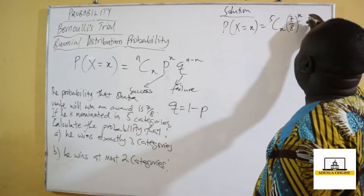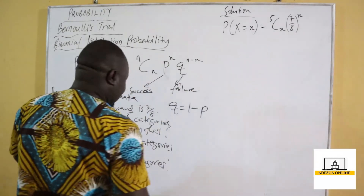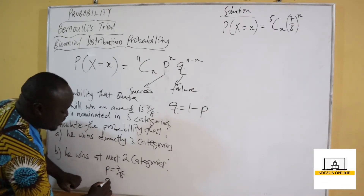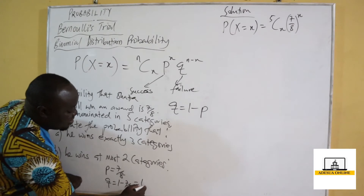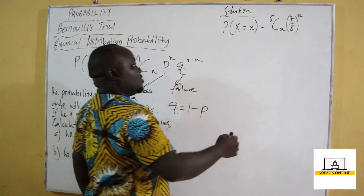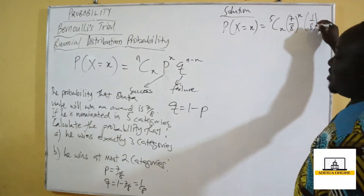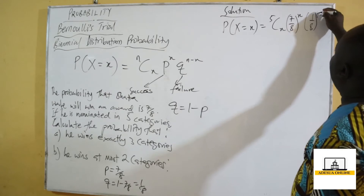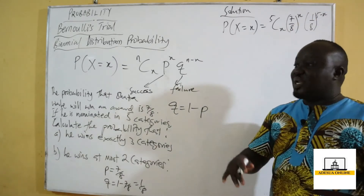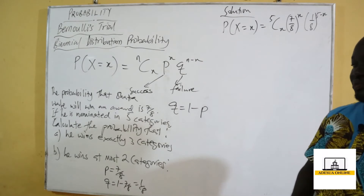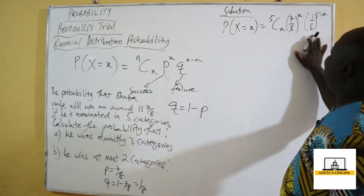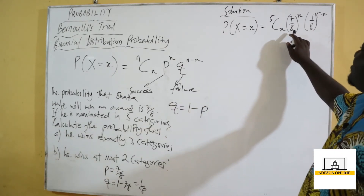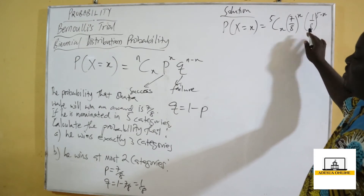So our formula becomes: P(X = x) = 5Cx times (7/8)^x times (1/8)^(n−x). If success p is equal to 7 over 8, then q equals 1 minus 7 over 8, which is 1 over 8. So failure is 1 over 8 raised to the power 5 minus x. The failure is just the probability that he will not win the award — 7 over 8 is for winning, and 1 over 8 is for not winning.